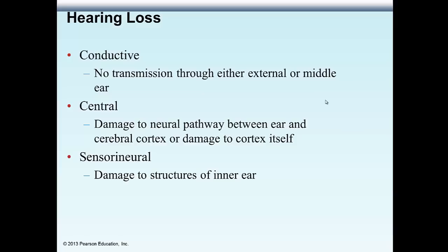There are a couple of different ways we can lose our sense of hearing. The first is conductive hearing loss — no transmission through the external or middle ear — due to the external ear not allowing sound waves in, or the tympanic membrane being damaged, or the ossicles not working properly. We also have central hearing loss, referring to nervous system structures such as the cochlear nerve, the vestibulocochlear nerve, or any portion of the brain and auditory cortex. Finally, sensorineural hearing loss refers to damage to the sensory neural structures in the inner ear — the cochlea — not performing properly.